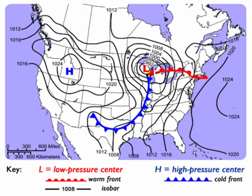Another thing shown on this map is this red line with half circles and the blue line with triangles. Those are denoting fronts, and this is the development of a mid-latitude cyclone, which we will be talking about in the next chapter next week. I hope that helps explain — let me know if you have any questions.